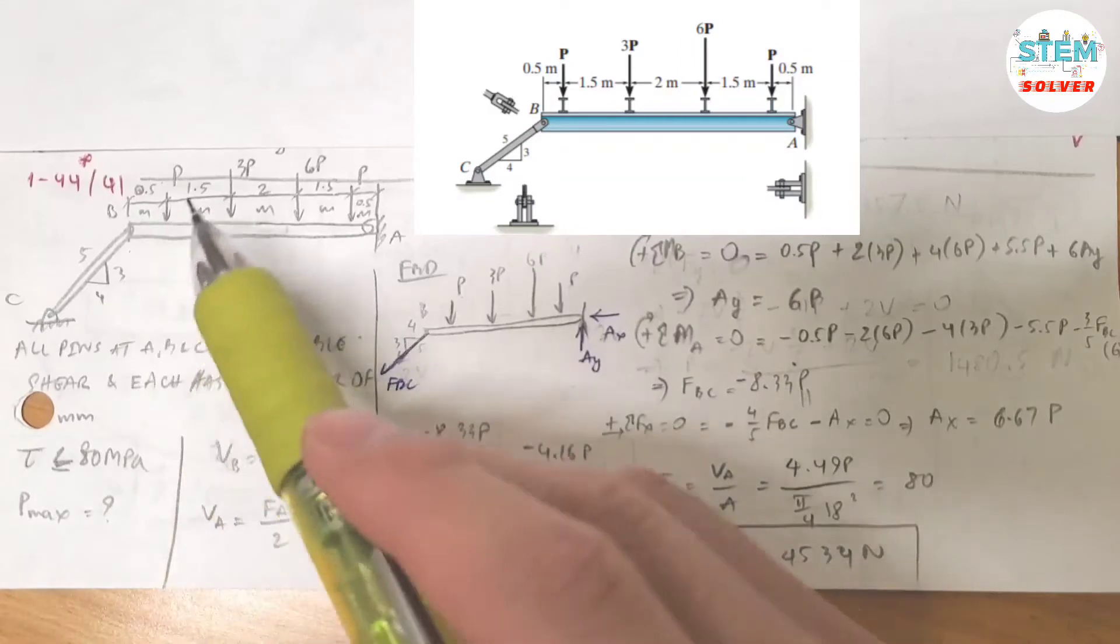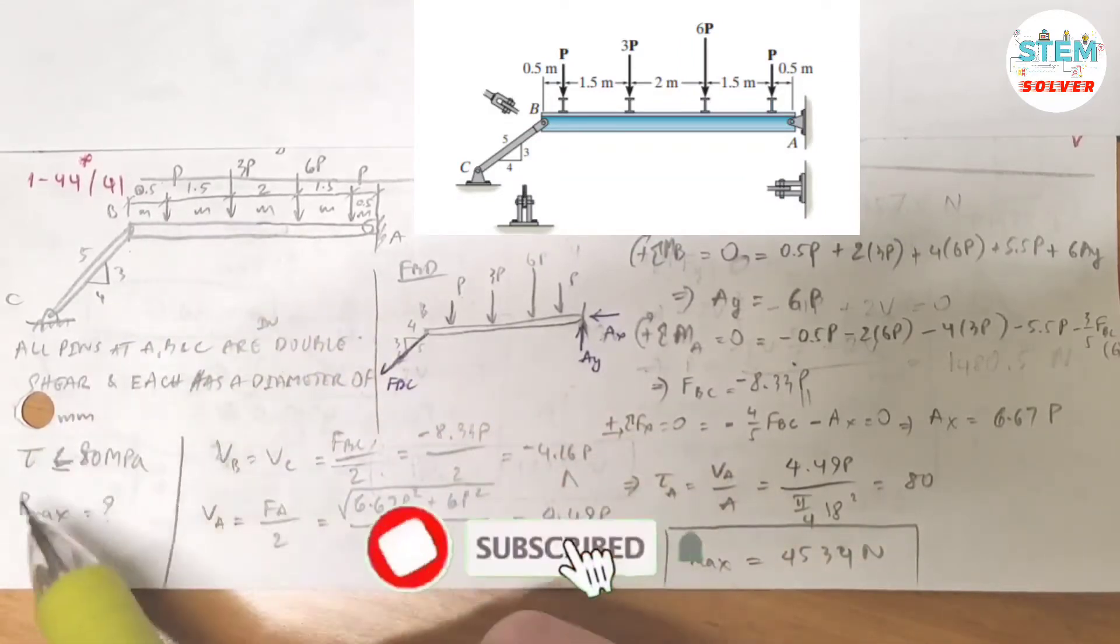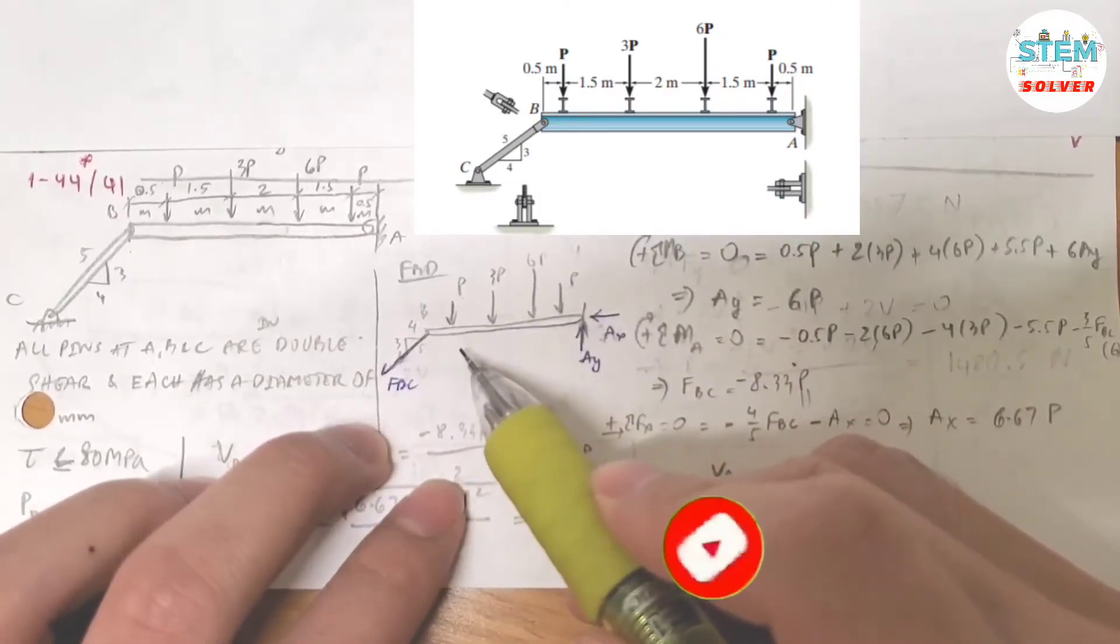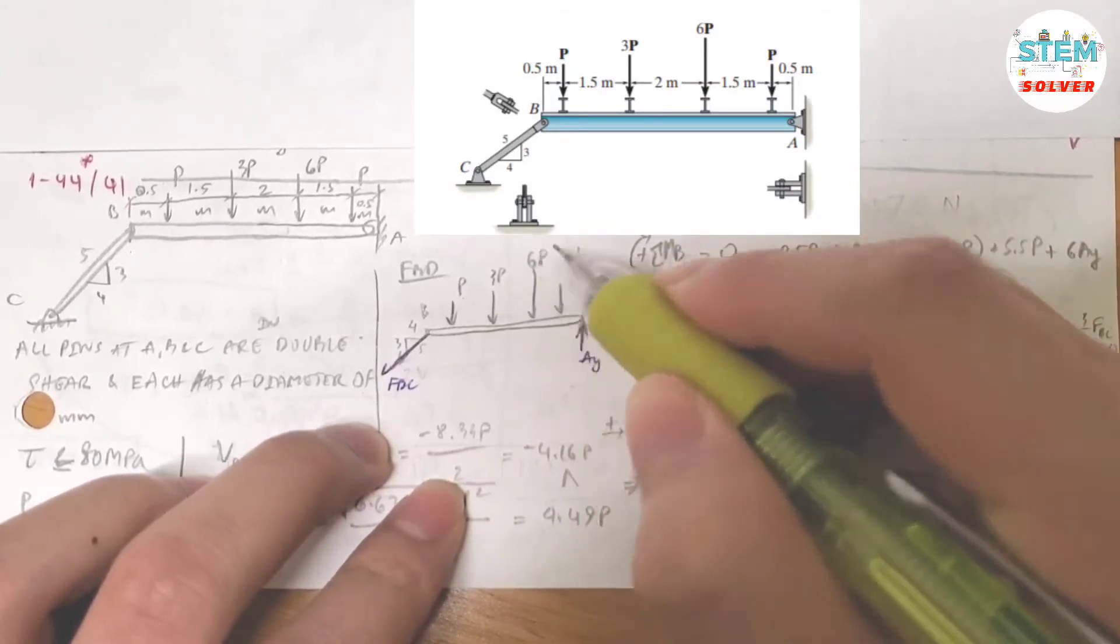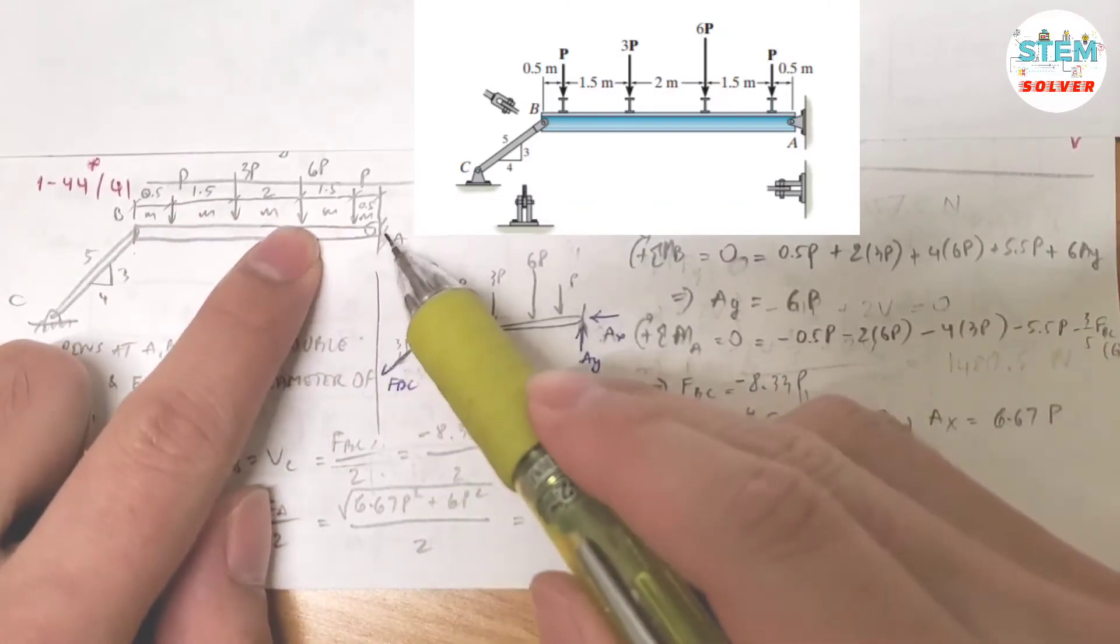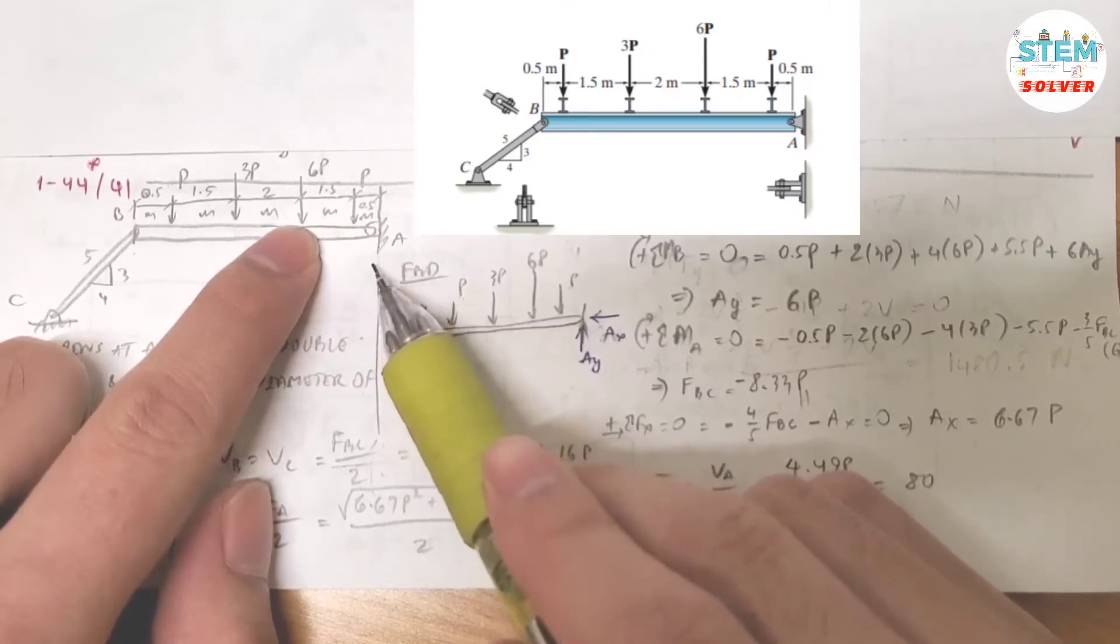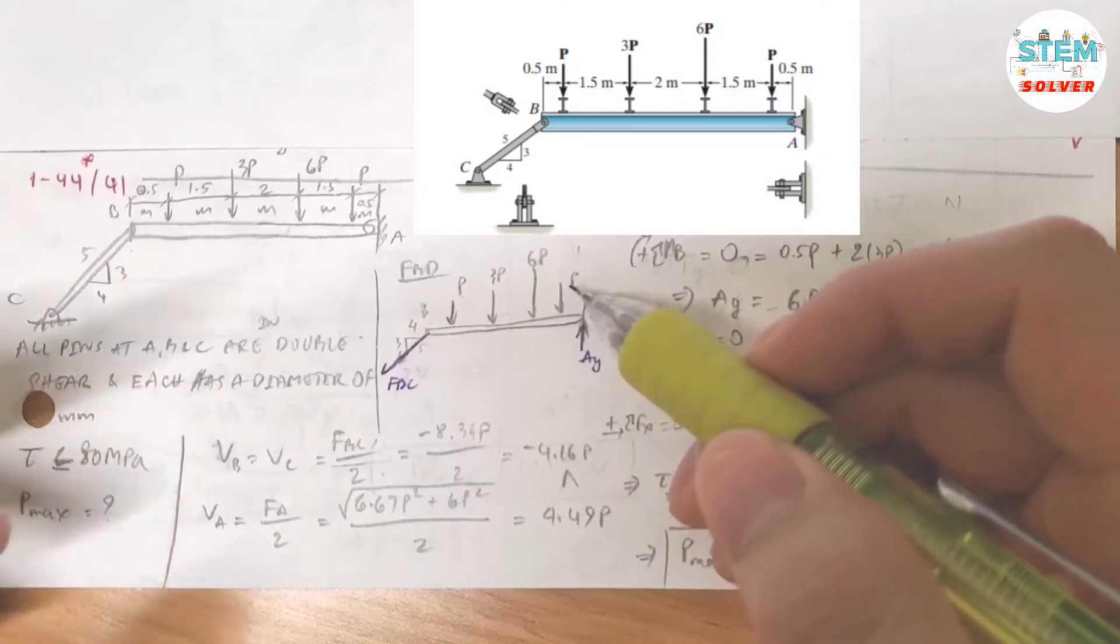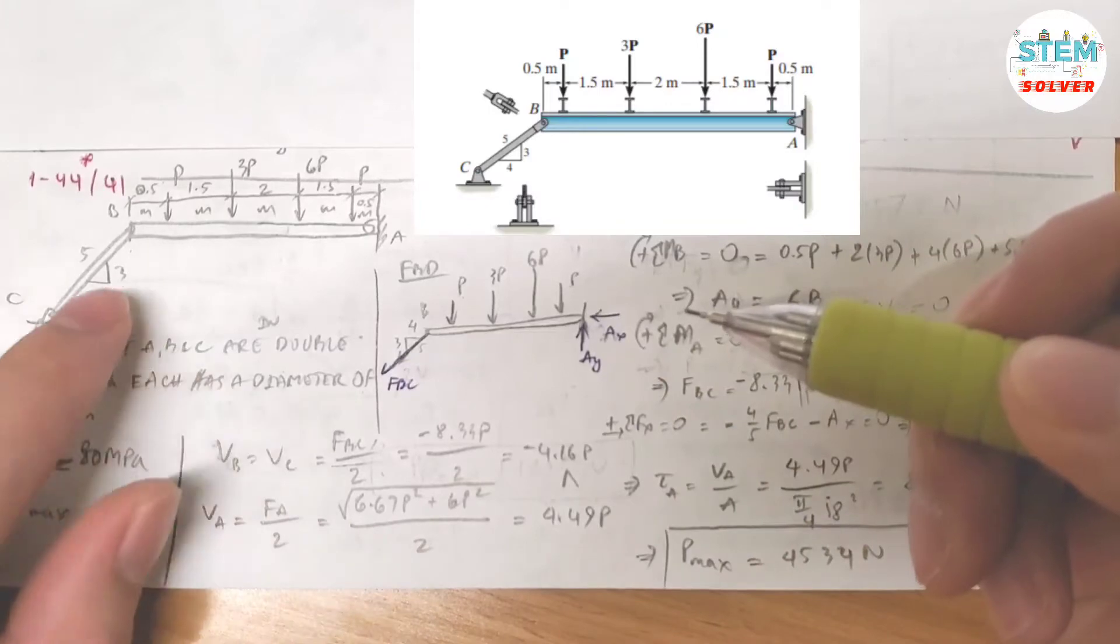You need to find the maximum P. Here's all the information you're given. Now over here, I drew a free body diagram for it already. I focus on this member, then I have a force right here in X and Y components and another force in this member, which you can consider as a single force.